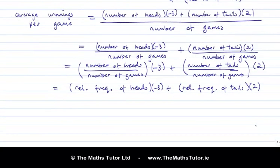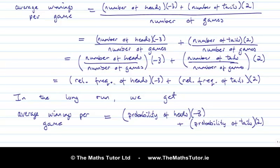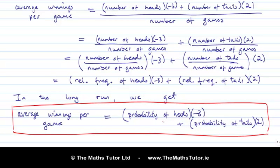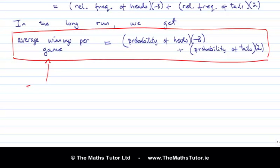Here's the key step: remember that in the long run, relative frequency becomes probability. So in the long run, the average winnings per game equals the probability of heads times −3, plus the probability of tails times 2. This thing — the average winnings per game in the long run — is called the expected value. We've shown how to work it out: it's the probability of each outcome multiplied by the value of that outcome, summed together.